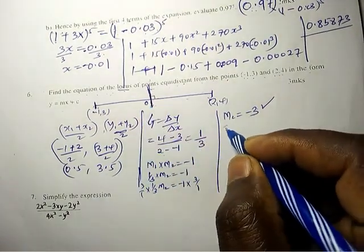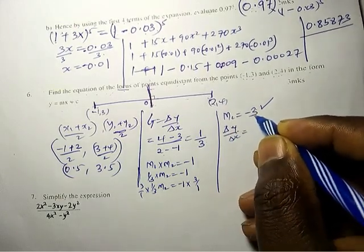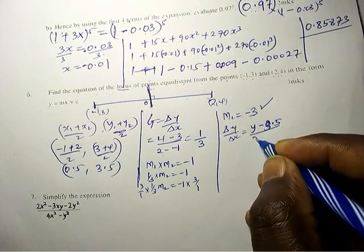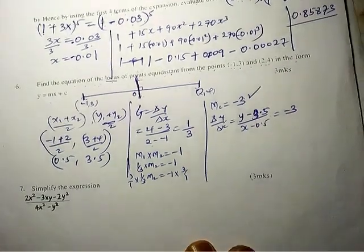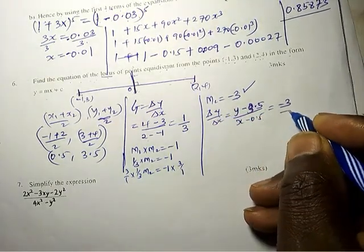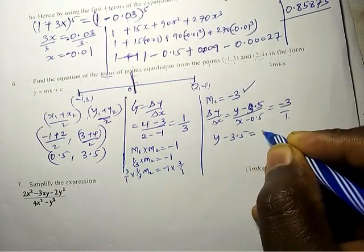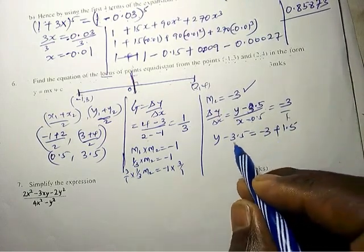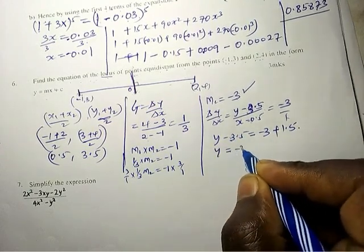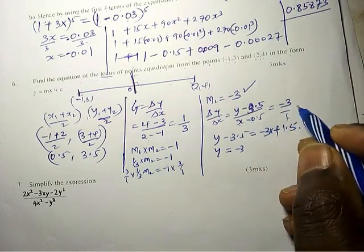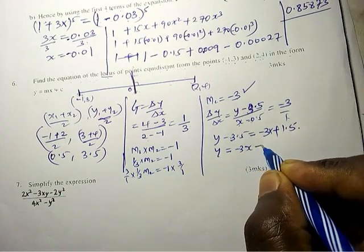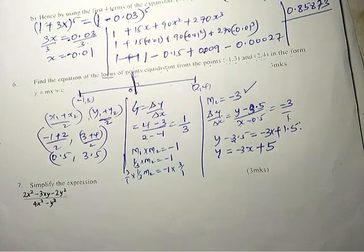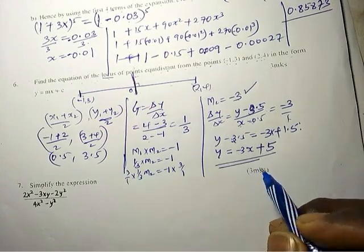Now using the midpoint 0.5, 3.5 and gradient negative 3, we form the equation: y minus 3.5 over x minus 0.5 equals negative 3. Expanding gives y minus 3.5 equals negative 3x plus 1.5. Taking terms to one side gives y equals negative 3x plus 5. That is the equation of the locus.